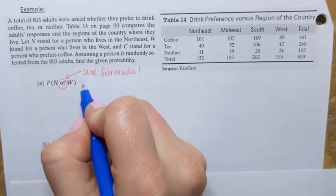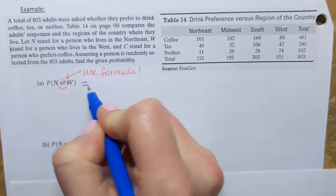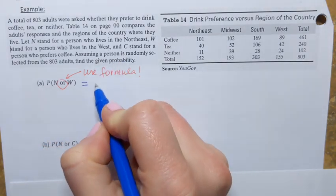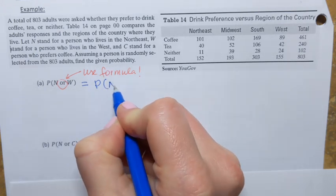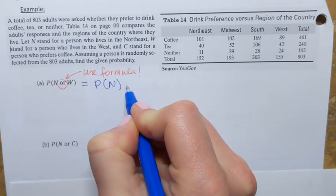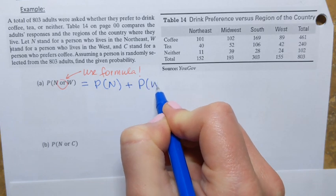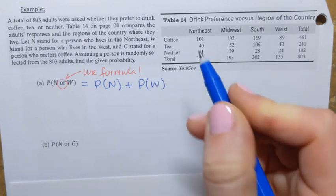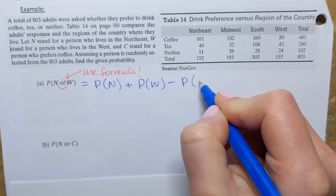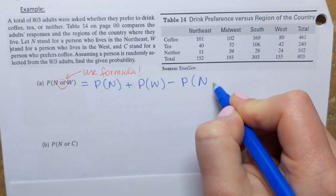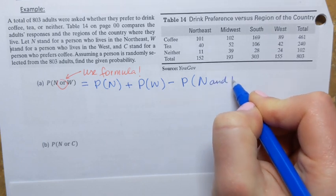Let me remind you how the general addition rule goes. You have to find the probability of the first event, P of N, add the probability of the second event, P of W, and subtract the probability of N and W.